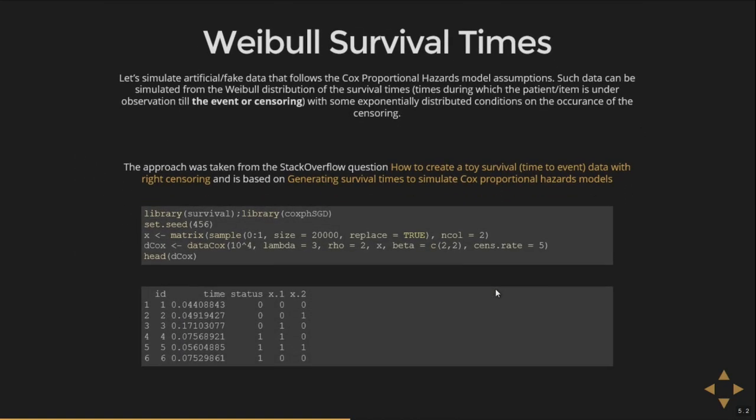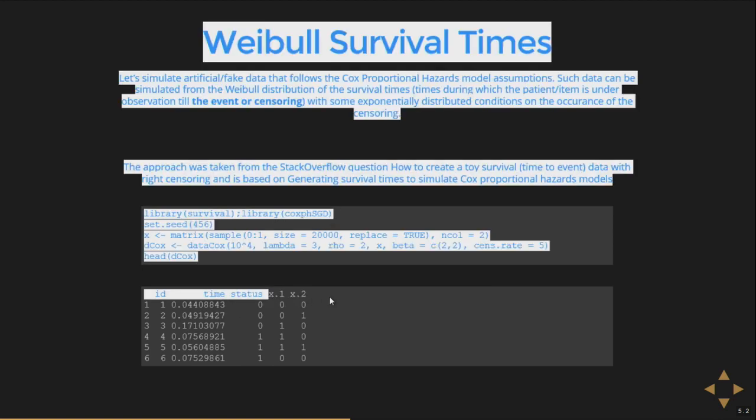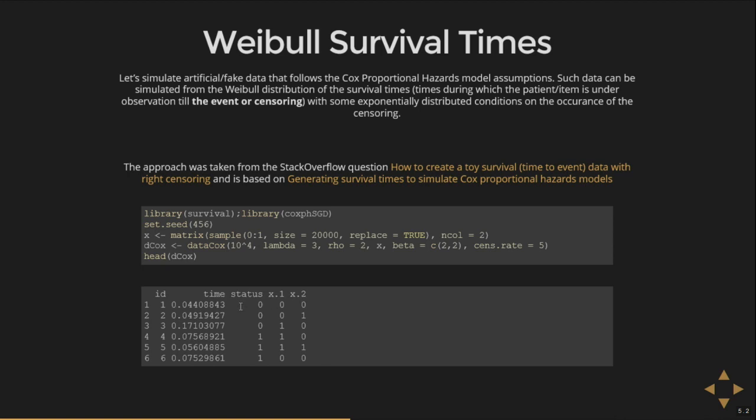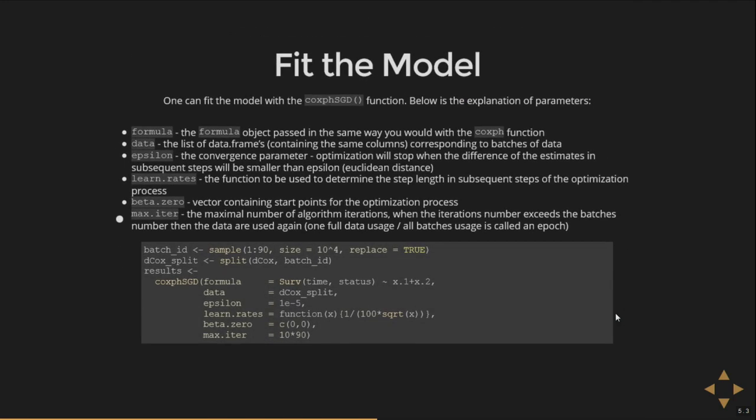We need some toy dataset. So the variable distribution for observation times, the time column, corresponds to the assumptions of Cox's model. And let us have some dummy variables, x1 and x2. And the status column in which you know whether the observation was censored or the event has happened. For example, the patient has died or something has happened.